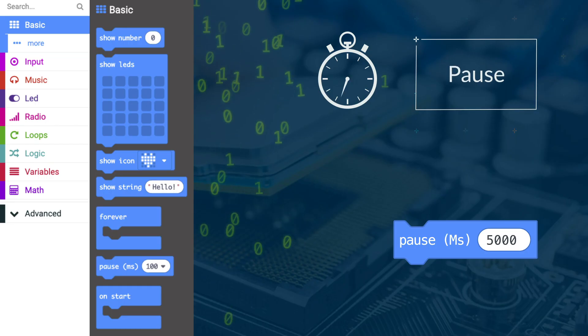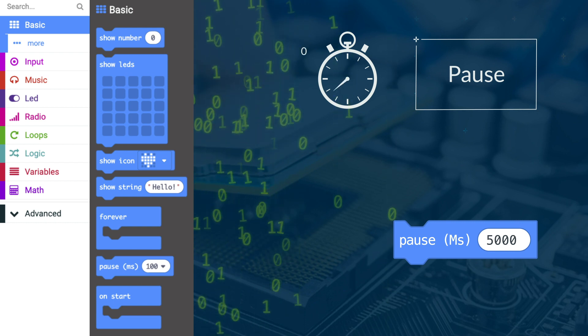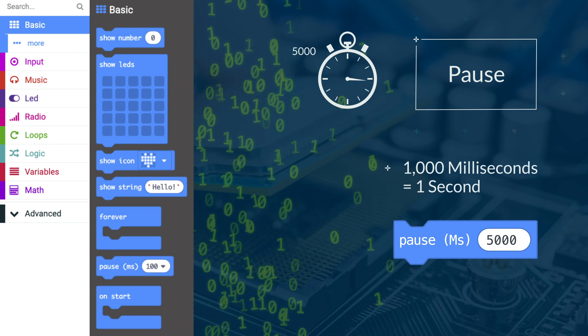In the basics menu, there is a pause block. This will stop the code running for the number of milliseconds you choose. 1000 milliseconds is equal to 1 second.